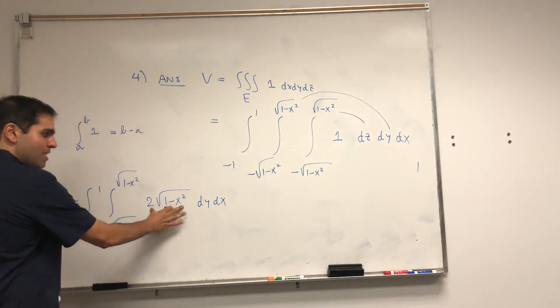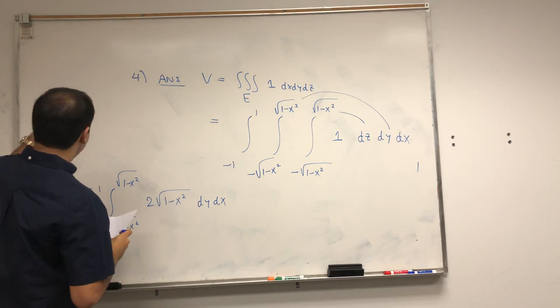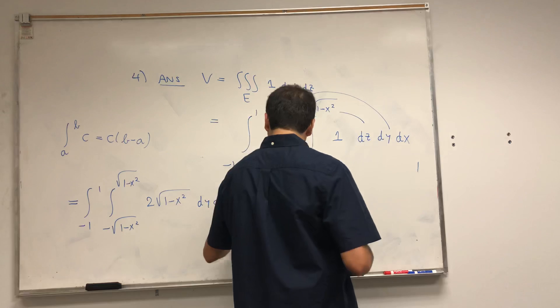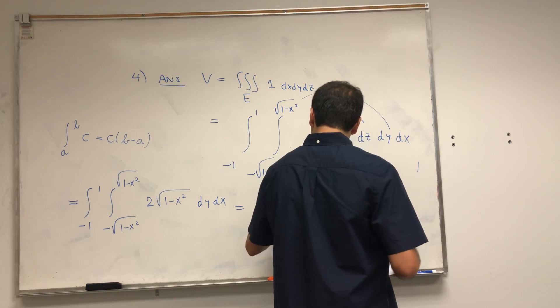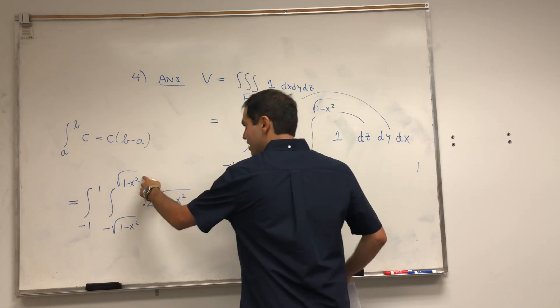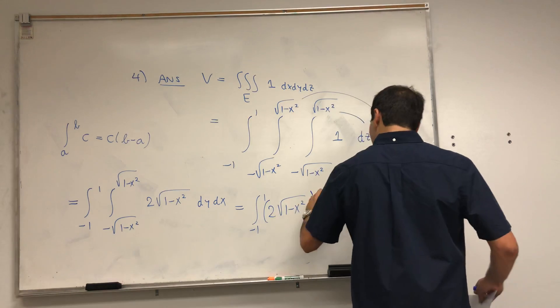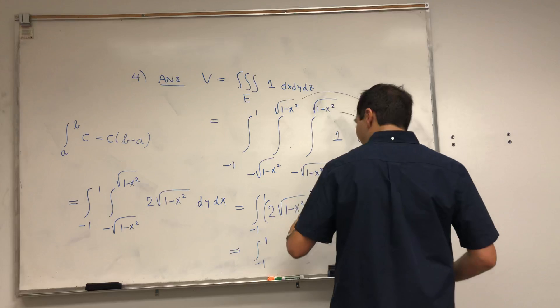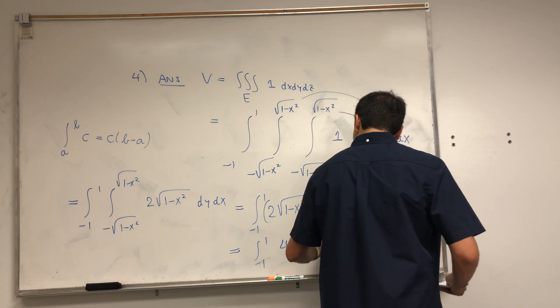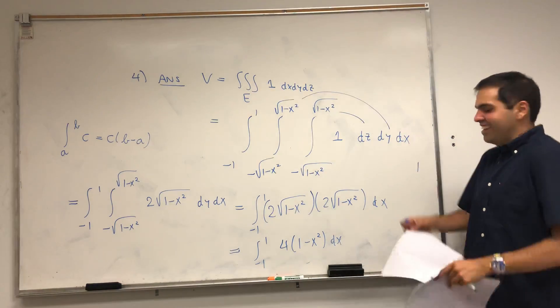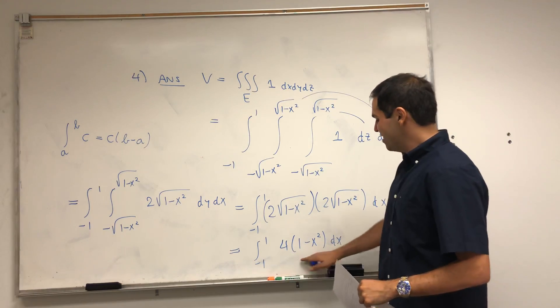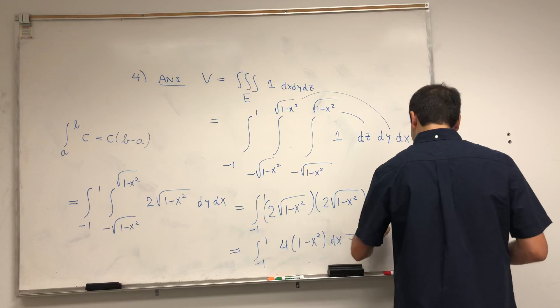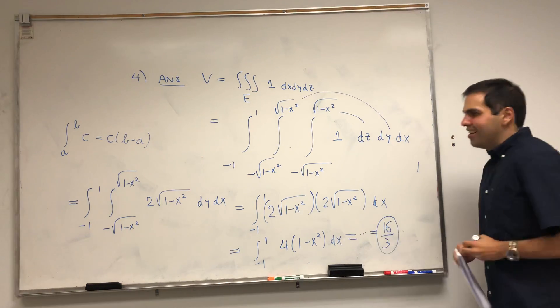So, this becomes integral from minus 1 to 1. The constant, which is 2 times square root of 1 minus x squared, times this minus this, which becomes another 2 times square root of 1 minus x squared. And look, this really complicated volume actually has a nice integral. 4 times 1 minus x squared. And yes, a single variable calculus student can do this now. But if you want, you can use evenness and write it as 2 times the integral from 0 to 1. But if you calculate it in the end, you get 16 thirds.